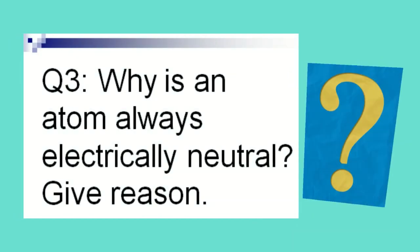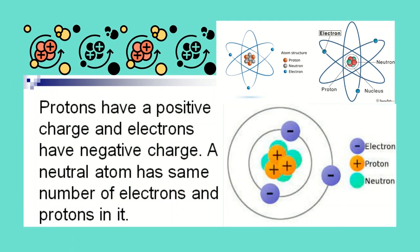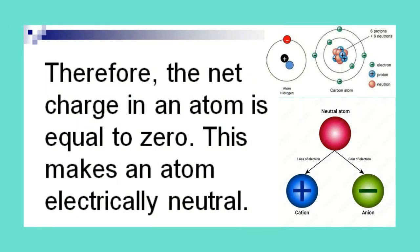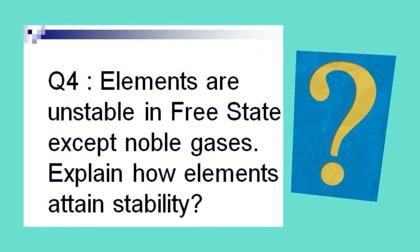Why is an atom always electrically neutral? Give reason. Protons have a positive charge and electrons have negative charge. A neutral atom has the same number of electrons and protons in it. Therefore, the net charge in an atom is equal to zero. This makes an atom electrically neutral.